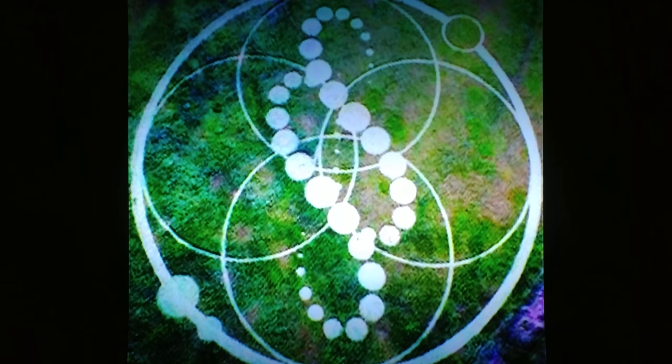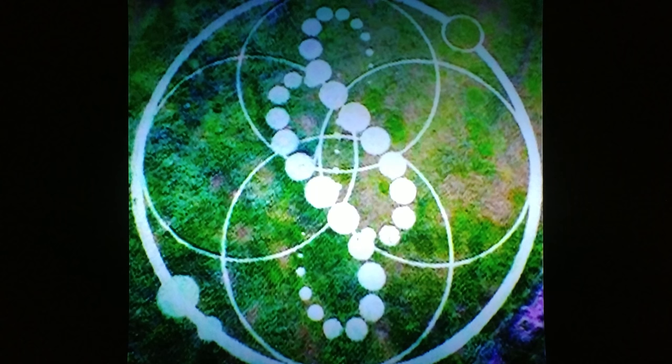Look at the intricacies. The way you know a real crop circle is the stalks are bent, not broken. And then we have this one, as you can see, the symmetry, the perfection.